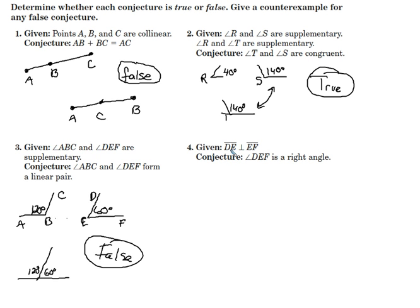Number four, given line DE is perpendicular to EF. DE and EF, perpendicular to each other. So let's make F out here.